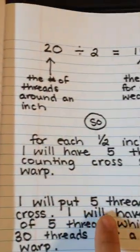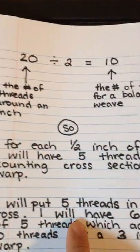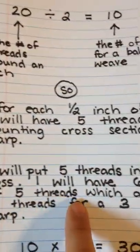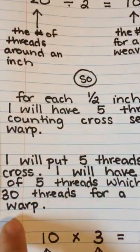I will put five threads in my counting cross. I will have six sections of five threads which add up to 30 threads for a three inch wide warp.